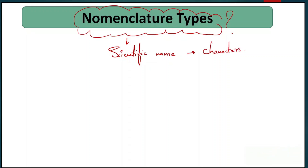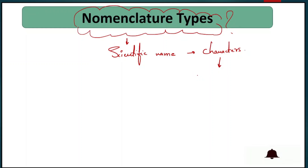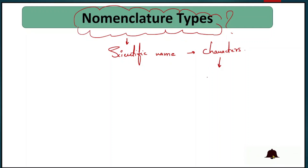If we see the characters of the organism and need to keep its name, we need to use the organism as a sample or basis for classification and naming.